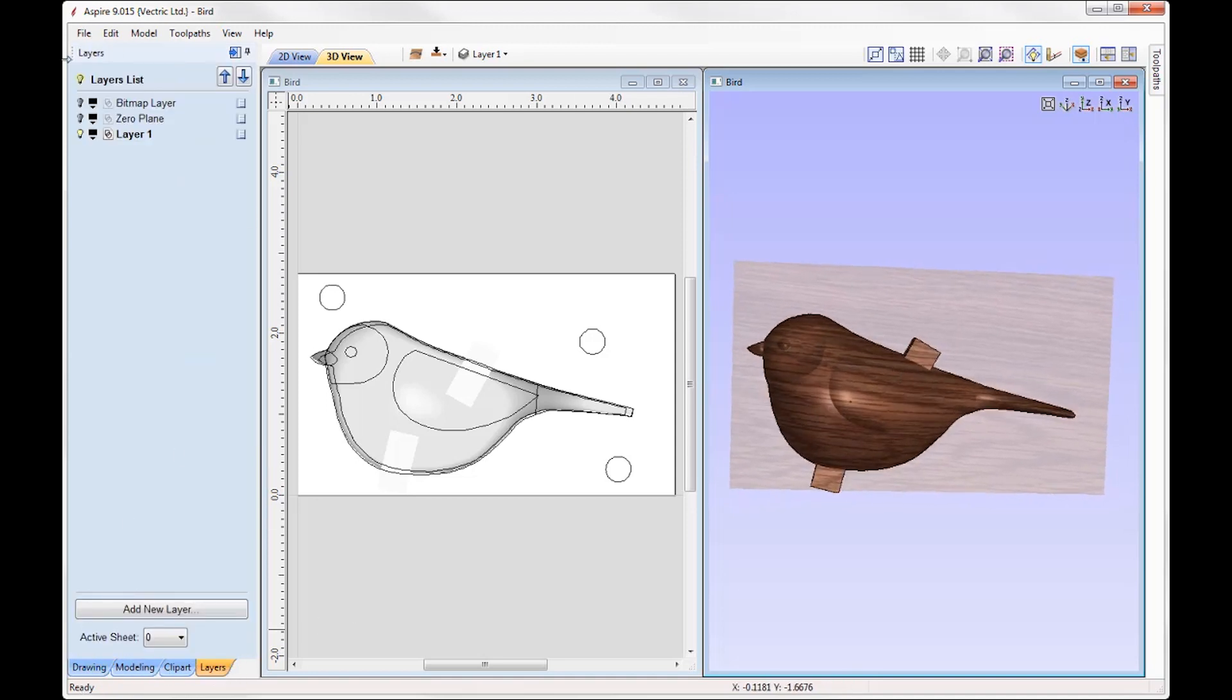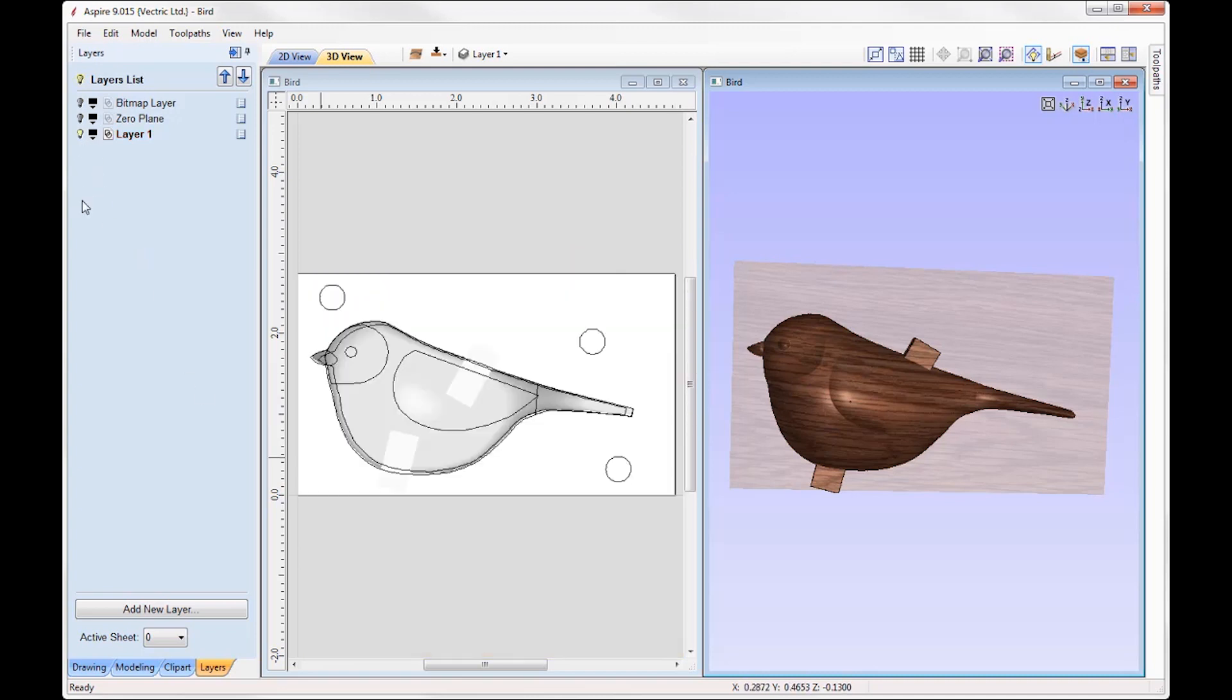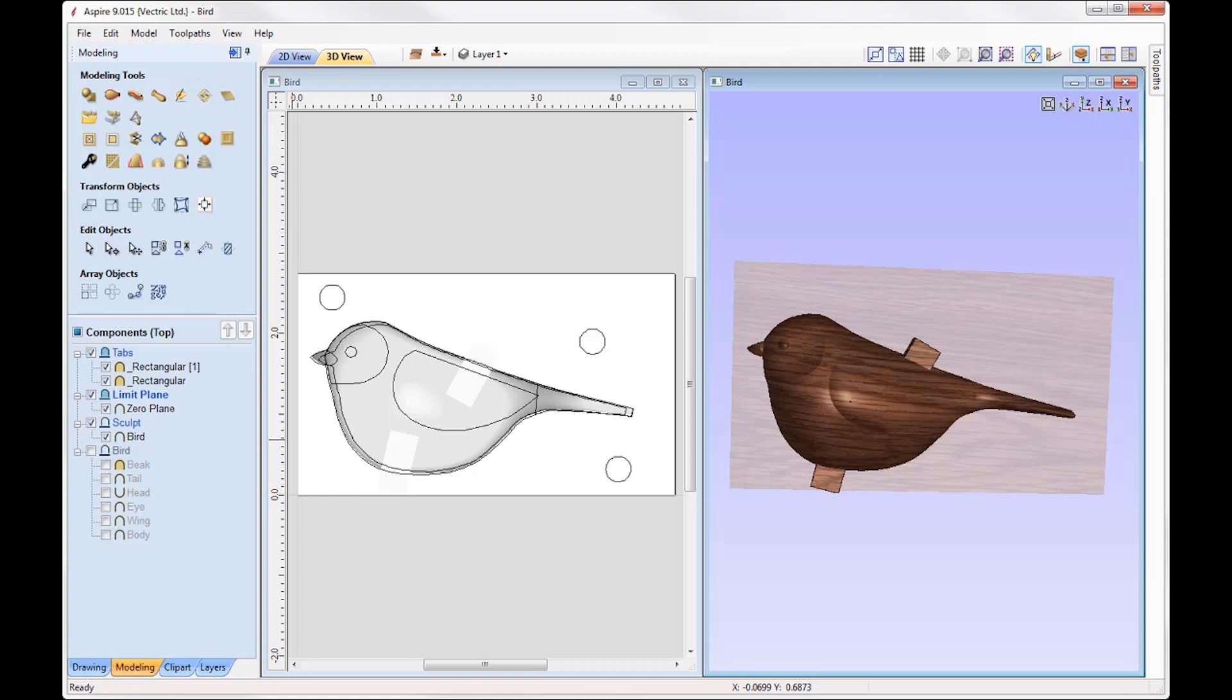If we go to the Layers tab we can just switch off layer 1. I'm just going to switch on the bitmap layer so you can see that Hannah's used this image of a blue tit as a guide to create her own bird. So I'll switch that off and then we'll switch on layer 1, and if we go into the Modeling tab we can take a look at how she's built this up. If I just undraw the tabs level, the Limit Plane and the Sculpt level, and switch on the bird level, you can see all of the individual parts that make up this bird. You can take a look at how Hannah's modelled the bird and built it up.